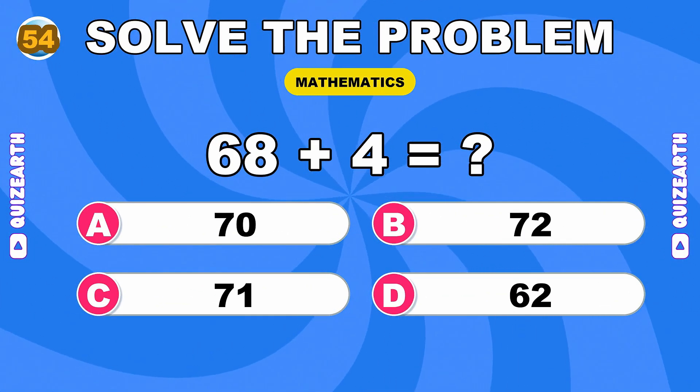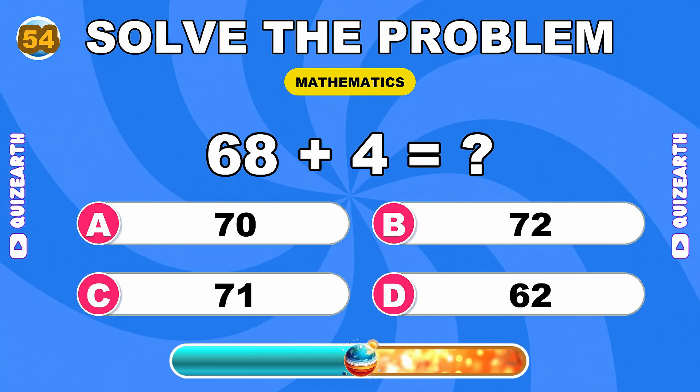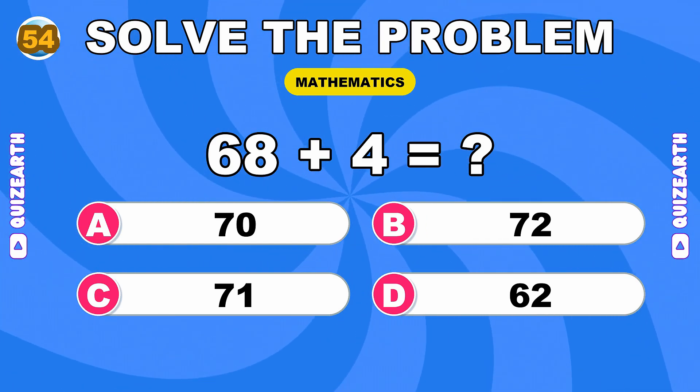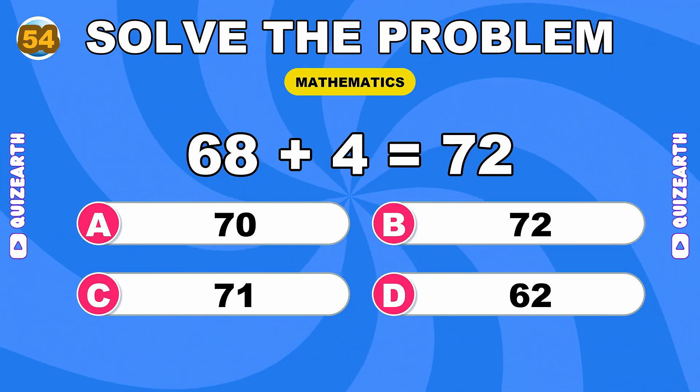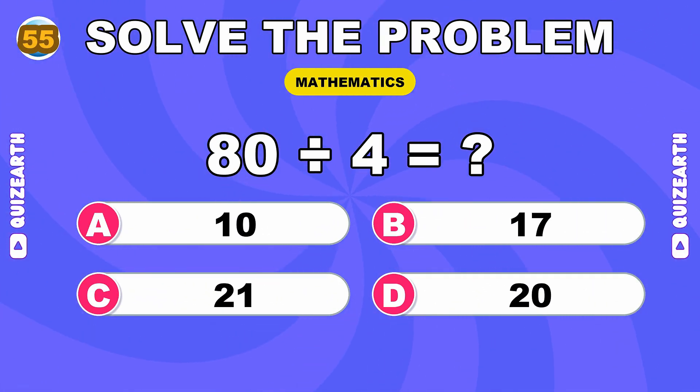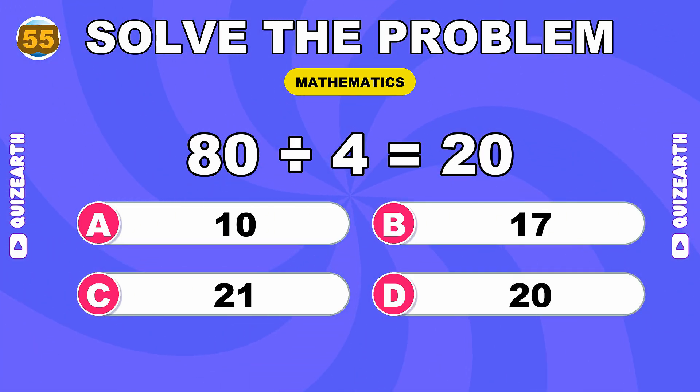What do you get when you add 68 and 4? Pure velocity, 72. What is 80 divided by 4? Amazing reflexes, 20.